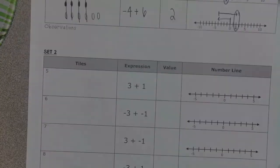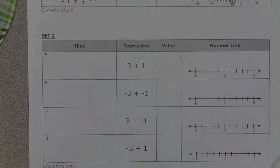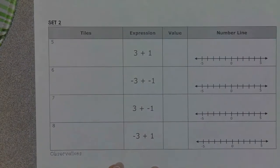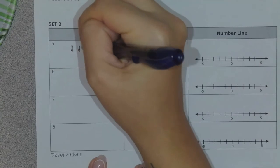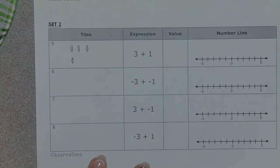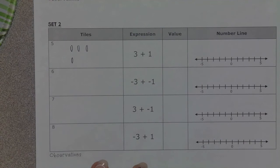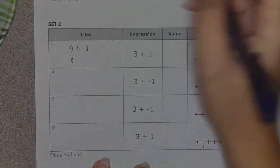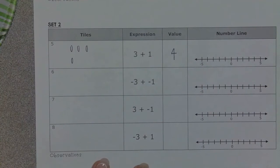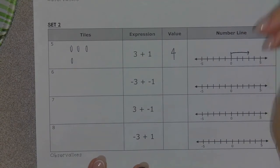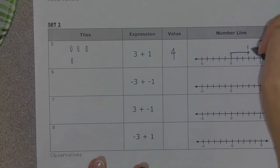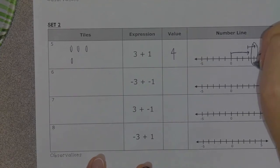Let's look at set two. This time they gave us the expression — they told us what they want us to do. My very first one is going to be three positives plus one positive. I don't have any zero pairs to make here because everything is positive, so my problem just has a value of four. When I do my number line, as always I start at zero. Since it's positive three, I move to the right three spaces. Then since it's positive one, I move to the right one more space, and it lands at positive four.